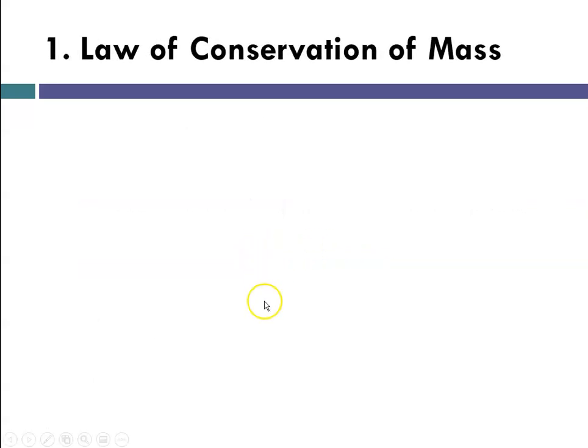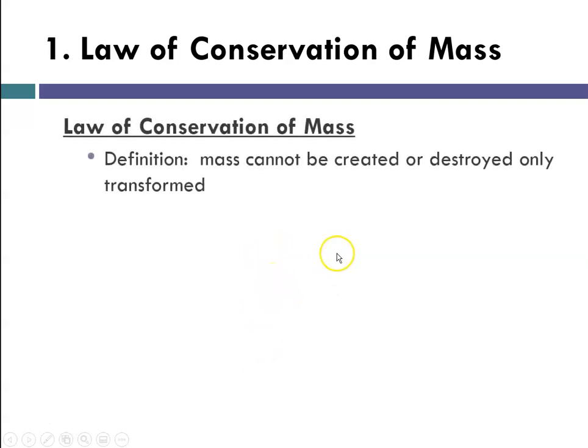The three laws that we talked about: we'll start with one, the law of conservation of mass. That states that mass cannot be created or destroyed, only transformed.